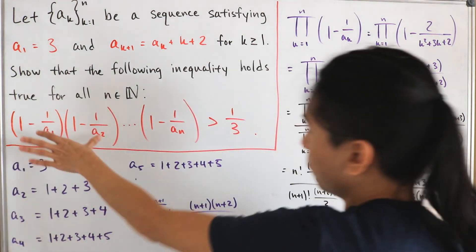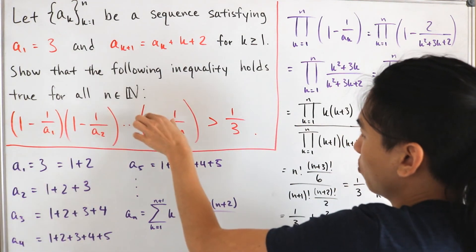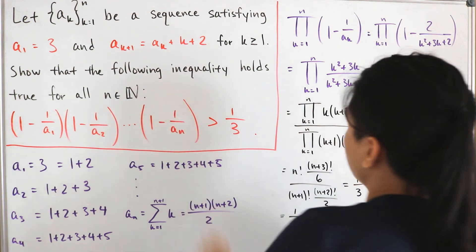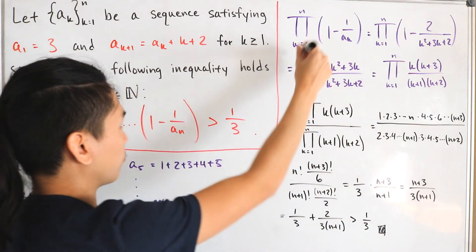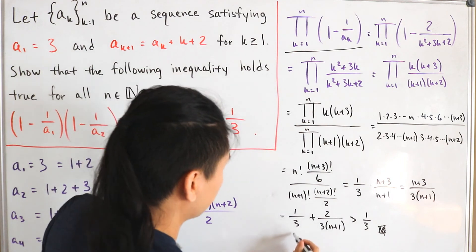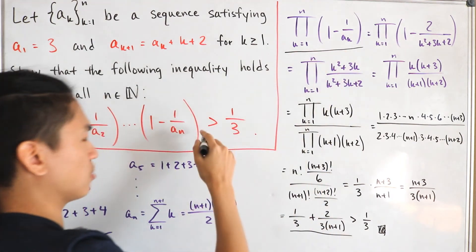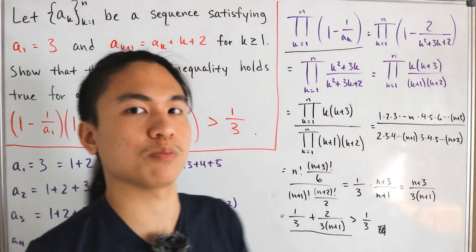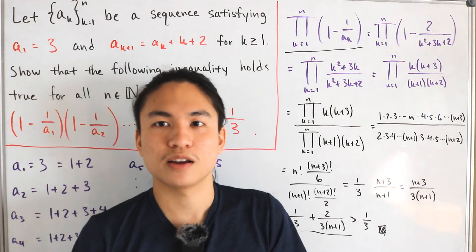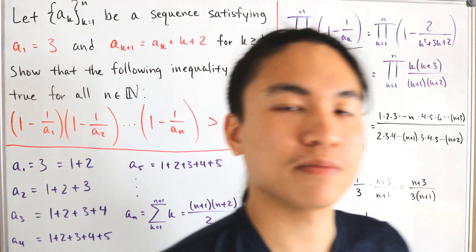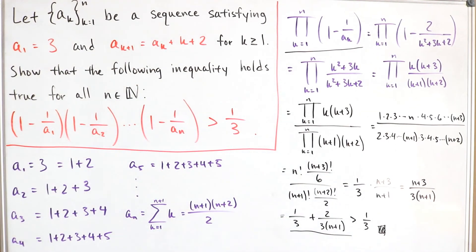Therefore, the product 1 minus 1 over a sub 1, all the way up to 1 minus 1 over a sub n, is indeed strictly greater than 1 over 3, which completes the proof. That's pretty cool.